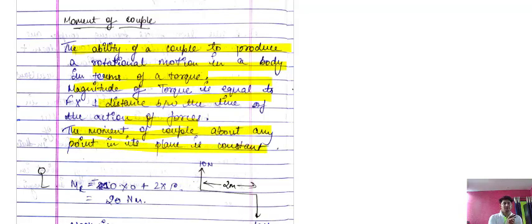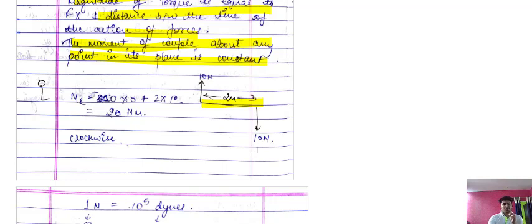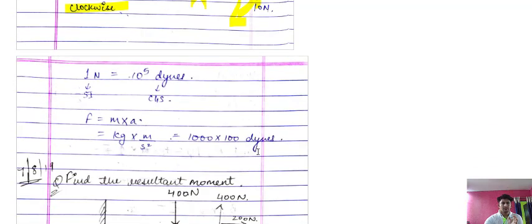The moment of a couple about any point in its plane is constant but not zero. For example, suppose this is an object with a 10 Newton force here and a 10 Newton force here. If we take point X, the moment will be 10 into 2, producing a clockwise moment. For the other force at point X, the perpendicular distance is 0, so: 10×0 + 2×10 = 20 Newton meter, clockwise.